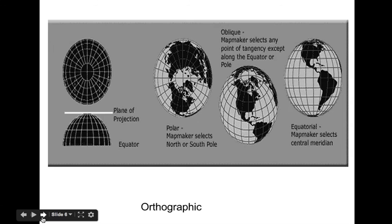In other words, the directions are only true from the center of a point of projection and the scale decreases along all lines radiating from the center point of projection. Any straight line through the center point is a great circle. Distortion increases away from the center point. The orthographic projection was known to the Egyptians and Greeks over 2,000 years ago.